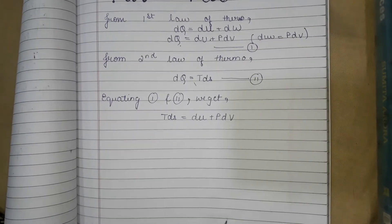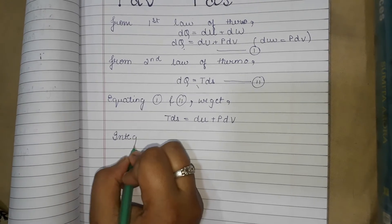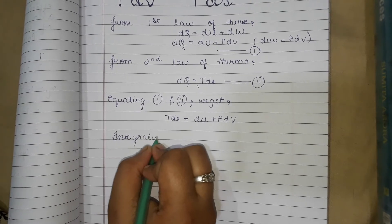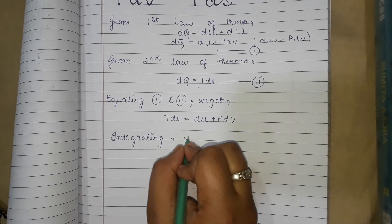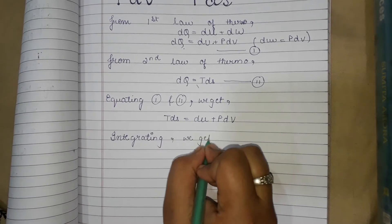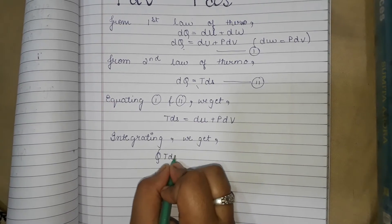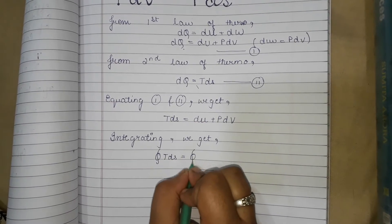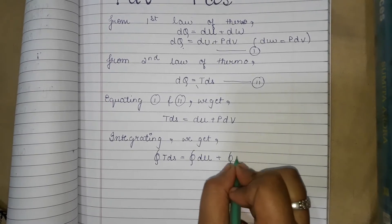If we integrate both sides, we get integral of TdS is equal to integral of du plus integral of PdV.